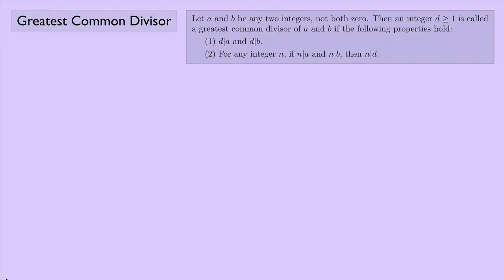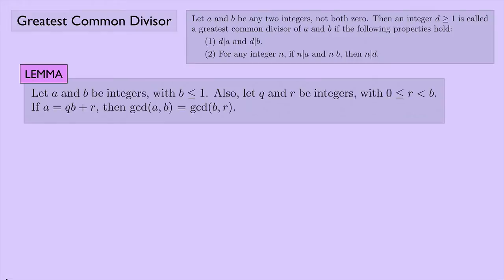So here is the lemma. I'll have my definition of greatest common divisor, and here's the lemma: let A and B be integers with B greater than or equal to 1. Also, let Q and R be integers with 0 less than or equal to R, which is less than B. Then, if A equals QB plus R, then the greatest common divisor of A and B is equal to the greatest common divisor of B and R. Let's look at a proof — I'm going to let D be the greatest common divisor of A and B.